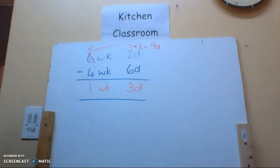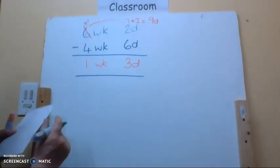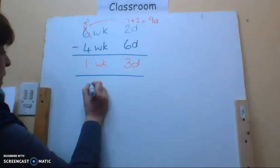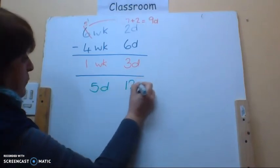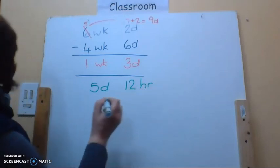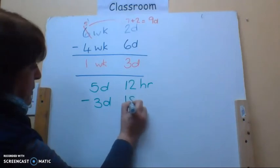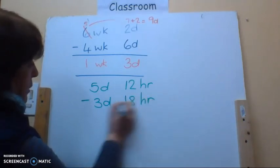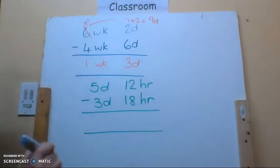I'm going to look at another one and it is days and hours and I'm going to just tilt it like that. So I'm going to say if I've got five days and 12 hours and I'm going to take away three days and 18 hours. So how many hours in a day? They're 24. Quite right.